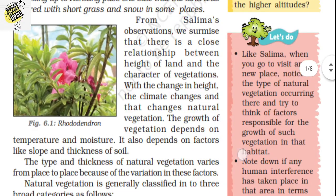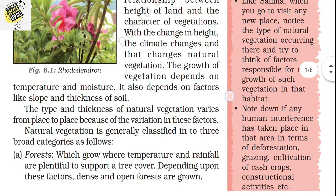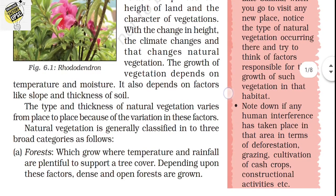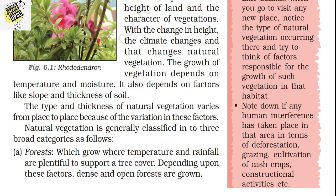There is a close relationship between height and vegetation. With the change in height, the climate changes, and with the change in climate, the natural vegetation changes. The growth of vegetation depends on temperature and moisture, and also on factors like slope and thickness of the soil. There are five important factors which lead to differentiation in vegetation: temperature, moisture, slope, and thickness of soil.